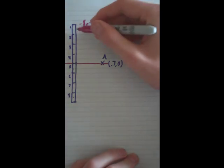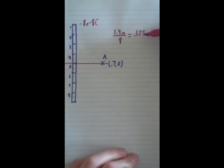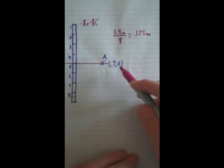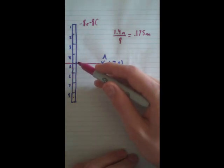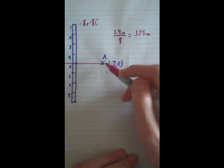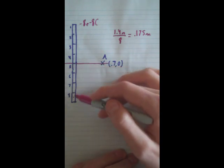So each one of these is 0.175 meters long. So now we need the distance, since this is the origin here, we need the distance from the point we're trying to get it from to where A is.